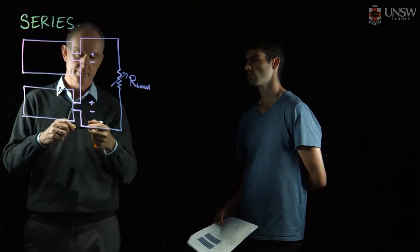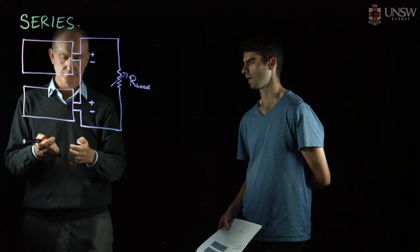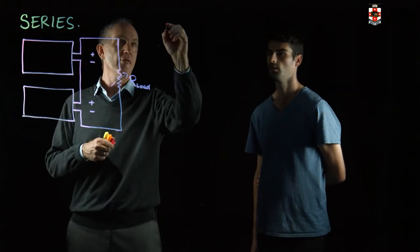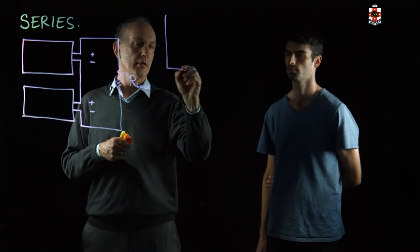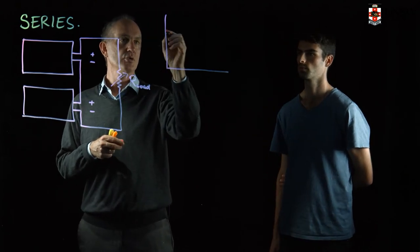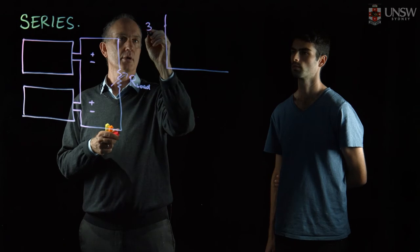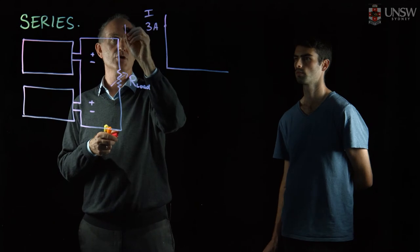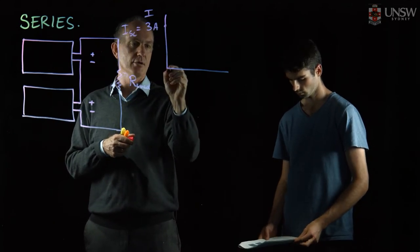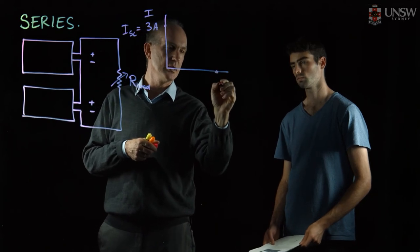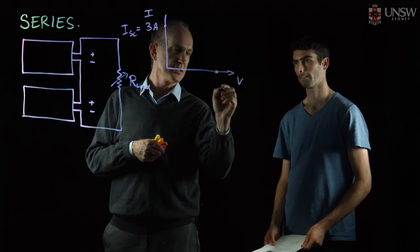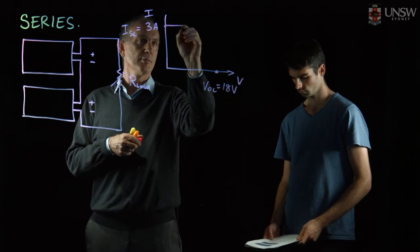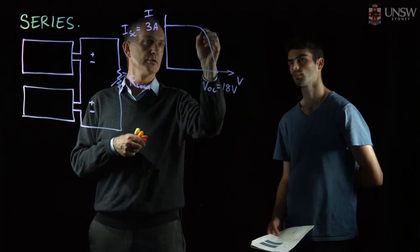How would you draw the individual IV curve and then the combined IV curve of these two modules? For the individual IV curve, we have three amps short circuit current — that's the current at zero volts. On the voltage axis, the open circuit voltage is 18 volts, and very approximately the curve will look like that.